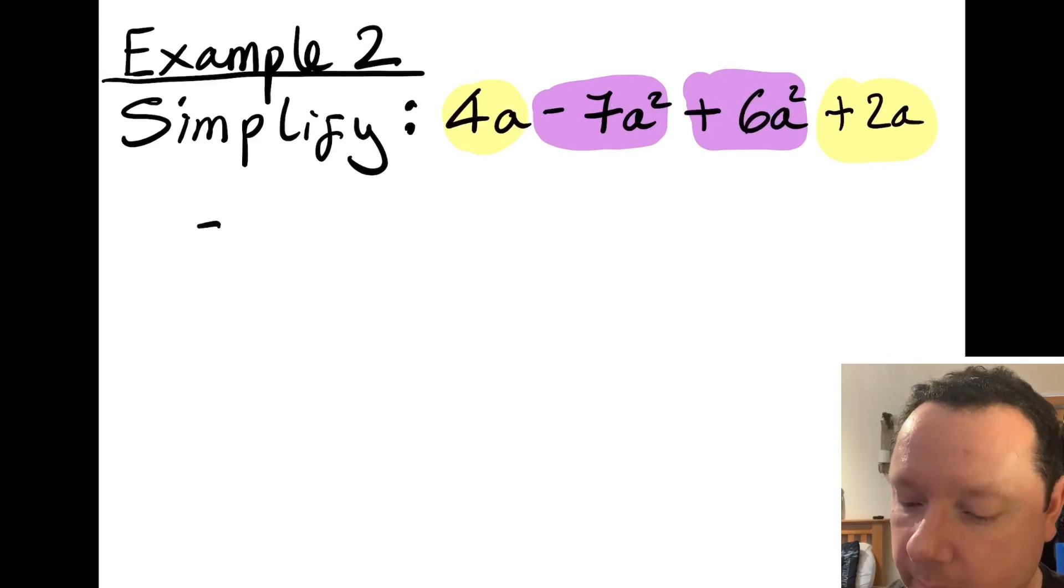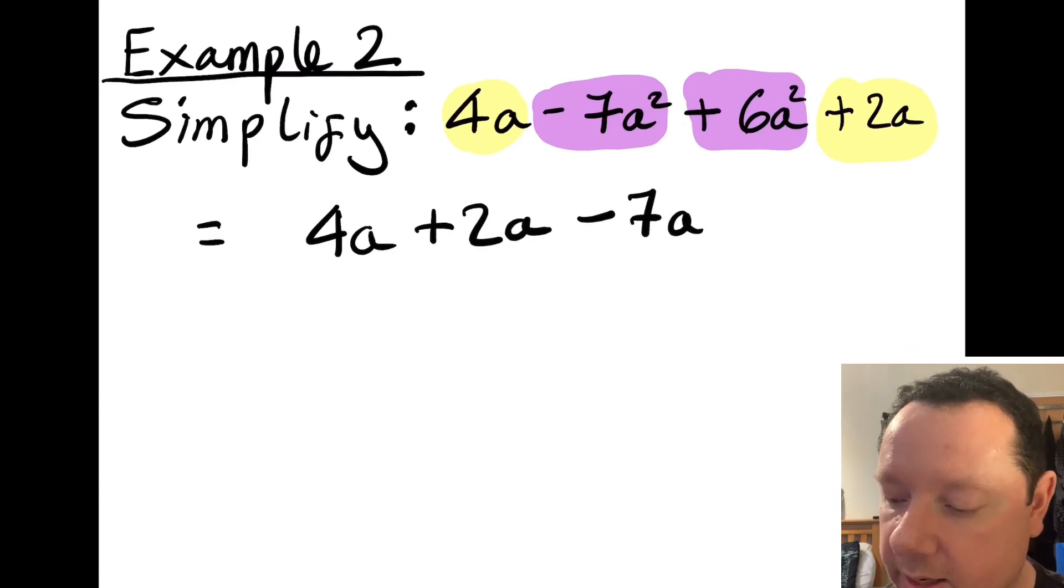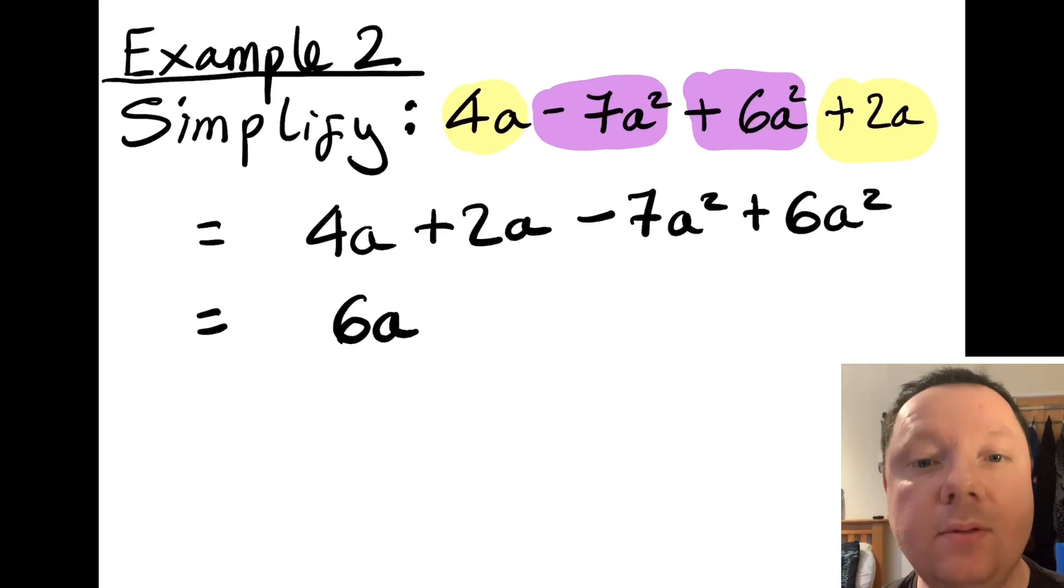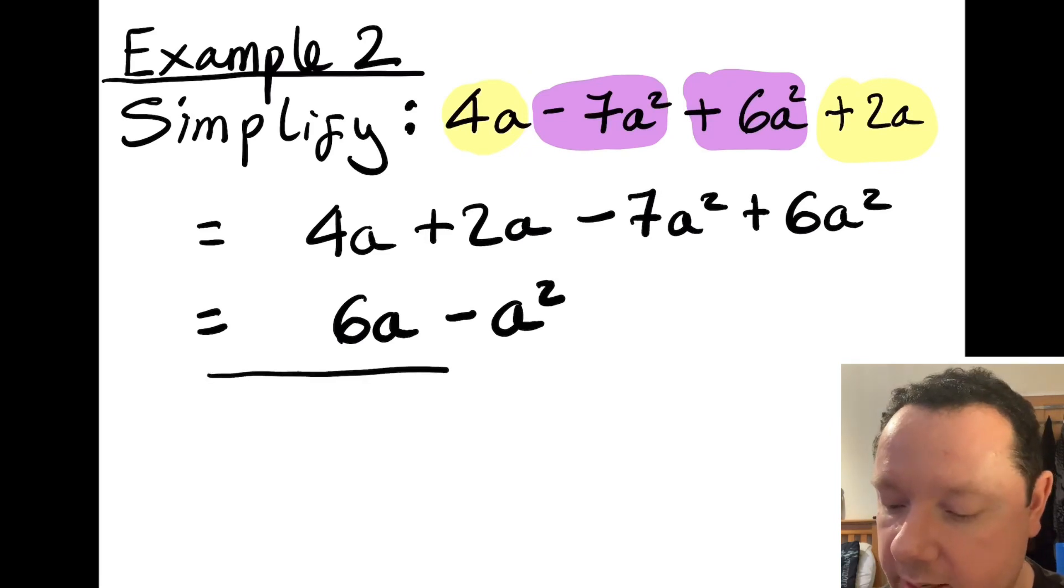So I can rewrite them. So I've got 4a as the first thing. Then the other yellow thing was plus 2a. Back to the start I've now got minus 7a squared. And the next purple thing I highlighted was plus 6a squared. 4a and 2a makes 6a. Minus 7 add 6 is negative 1. So it's negative 1a squared. We don't need to write 1 when there's 1 of something. So this is negative a squared. a and a squared are not the same terms. So we can't add or subtract them. So we're finished.